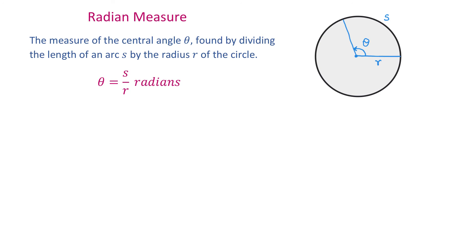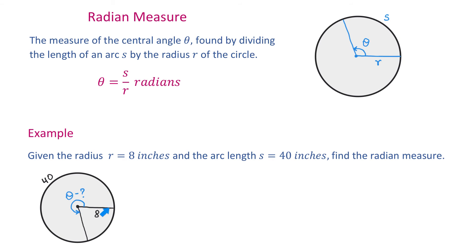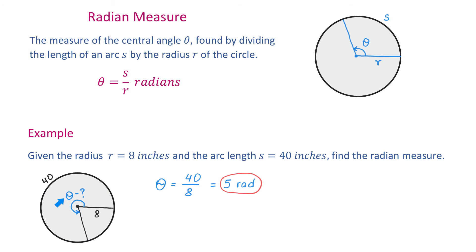Here we are given a circle with a radius of 8 inches and an arc with the length of 40 inches, and we have to find the measure of this angle in radians. According to the formula, to find the measure of angle theta we divide the arc length, which is 40 inches, by the radius, which is 8 inches. 40 divided by 8 is 5 radians. This is how we find the measure of an angle in radians when we know the arc length and the radius.